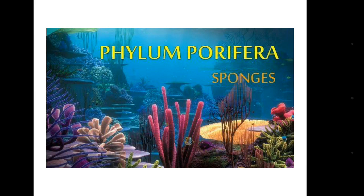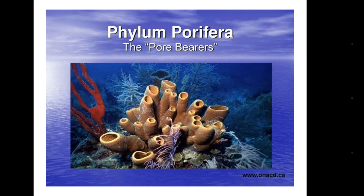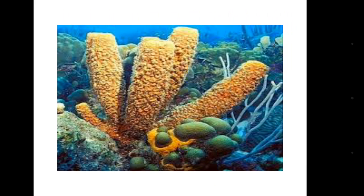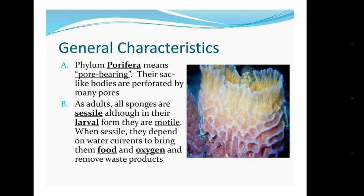Now let's check out the characteristics of the first phylum, Phylum Porifera. The animals in this phylum are known as sponges because they look like a sponge — similar to what we use for washing or soaking water. These animals are called pore bearers; they contain numerous pores in their body. They have one open cavity, and through these pores they carry out gaseous exchange and nutrient exchange.